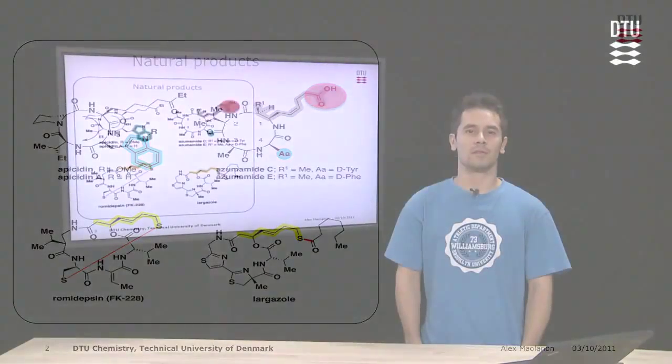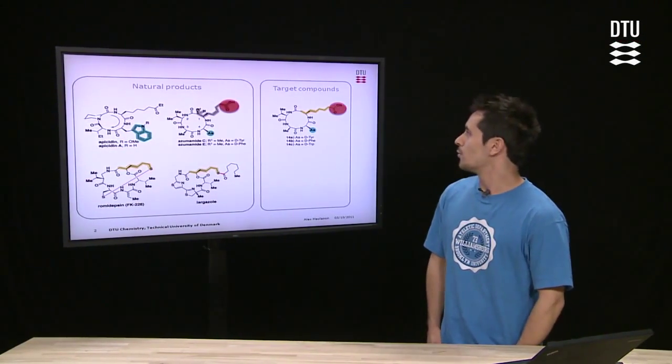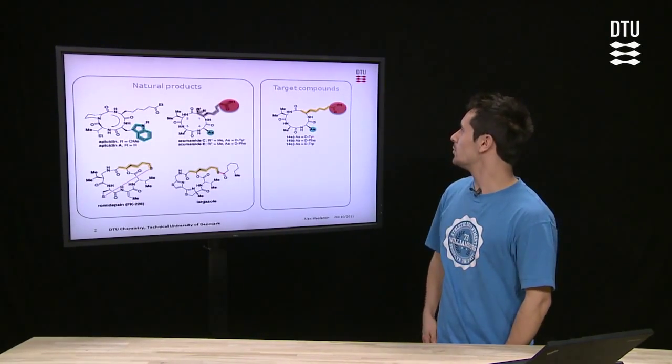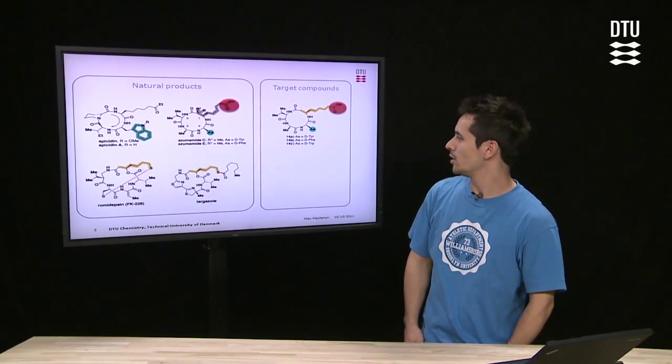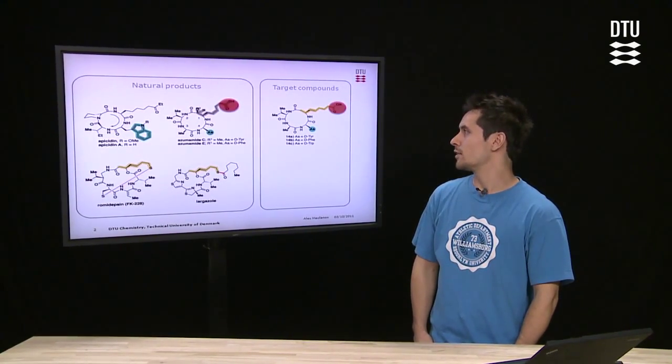In my project I have synthesized analogues of azumamide, shown here, where the methyl group has been removed and the double bond has moved to a similar position as lagozole and romidepacine, with the trans configuration as well.